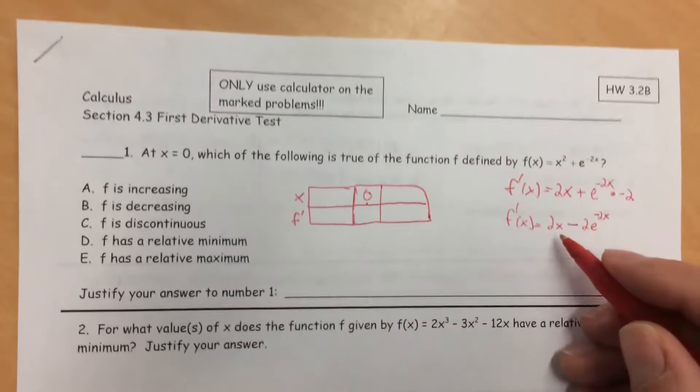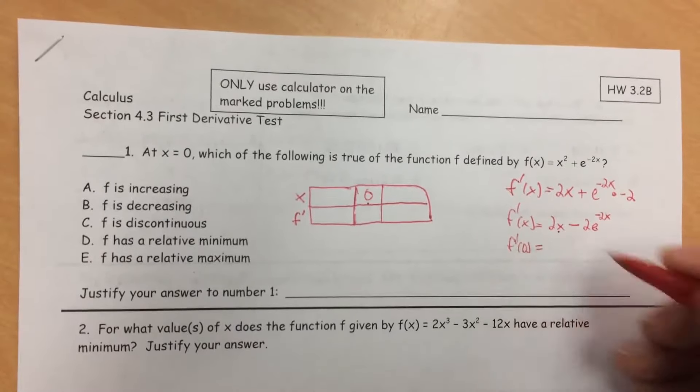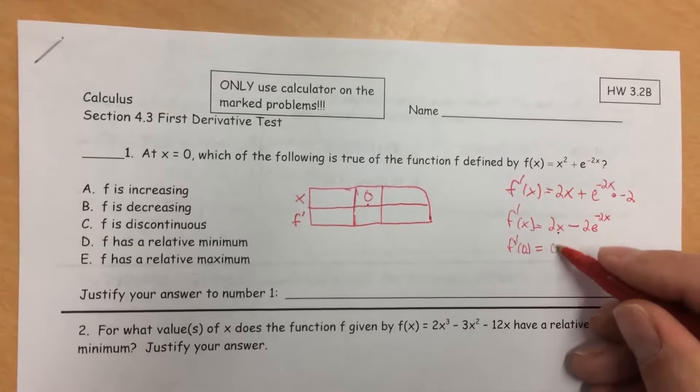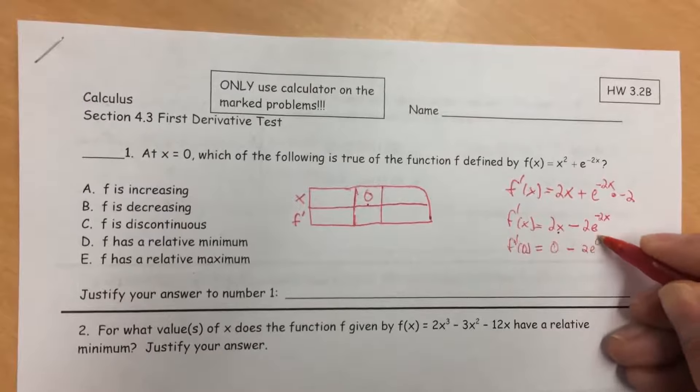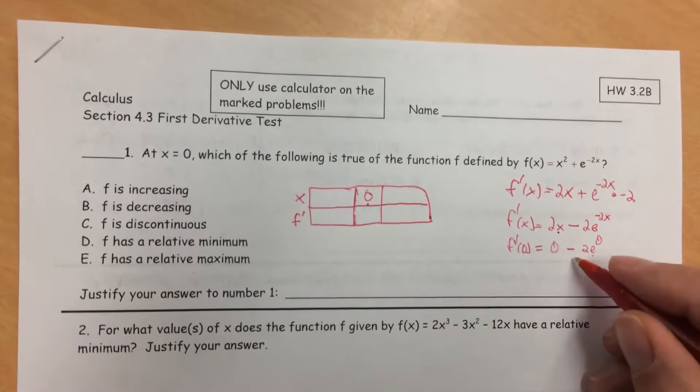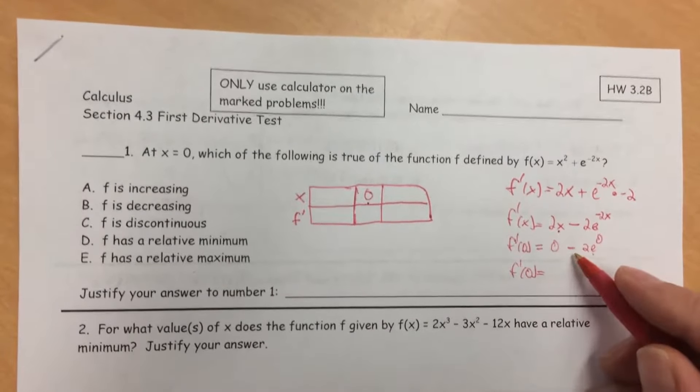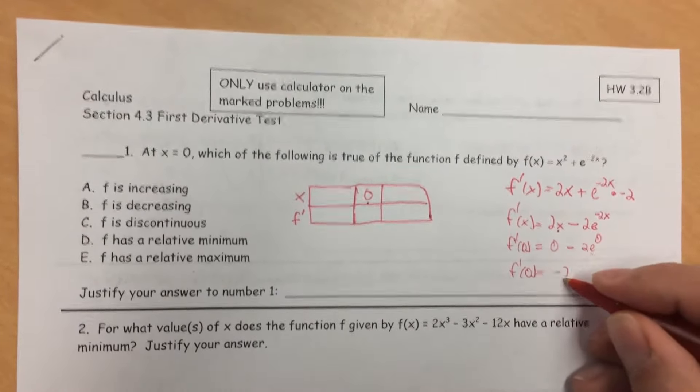But when x is 0, f'(0) equals 0 minus 2e^0. e^0 is 1, anything to the 0th power is 1. So we get f'(0) equals -2 times 1, which is -2.